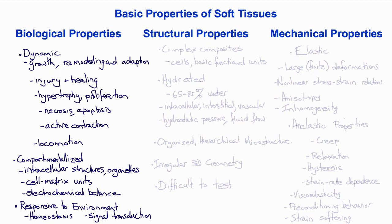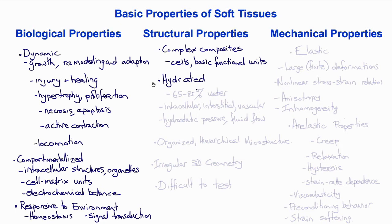There are many interesting, important biological properties that make soft tissues different from engineering materials. Soft tissues also have complex structural properties. They are complex composites consisting of cells and extracellular matrix, typically of more than one cell type. They are highly hydrated and the water content of most soft tissues is between 65% and 85% by volume. The water itself is compartmentalized into intracellular, extracellular or interstitial compartments, vascular and lymphatic water compartments.